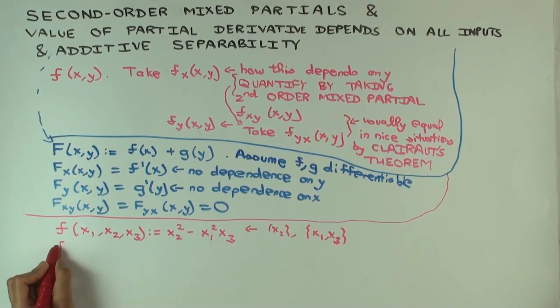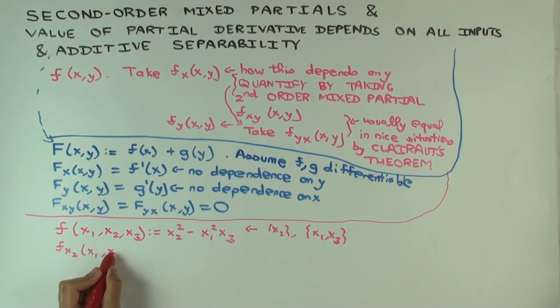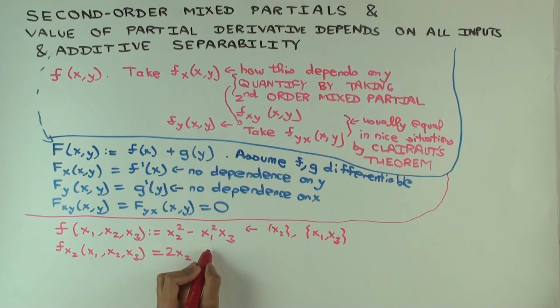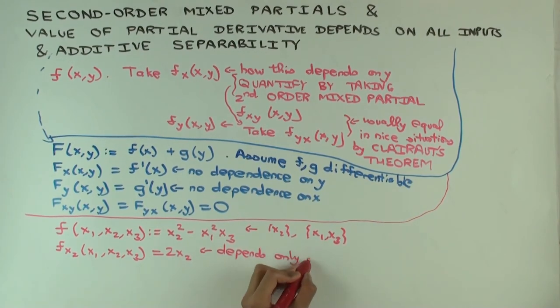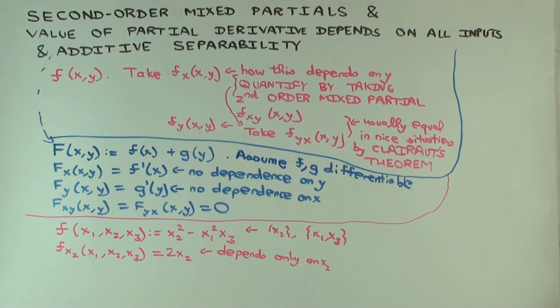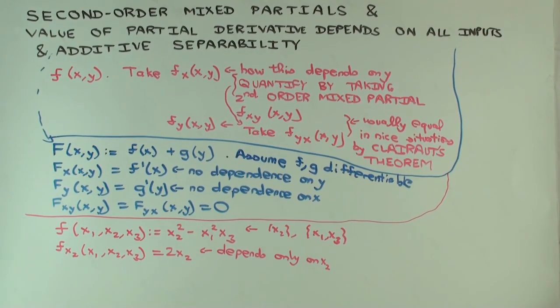Let's calculate f sub x2 of x1, x2, x3. What's that? 2x2. Minus anything? No. And this depends only on x2. So even though the function isn't additively separable, it's not completely additively separable. It's partially additively separable in terms of this partition of the set. And therefore, the derivative with respect to x2 depends only on x2 and not on the other pieces. Now, what would you expect would happen if you take the derivative with respect to x1? Well, it will depend on x3, x1 and x3. But it's not going to depend on x2 because these are in separate pieces.